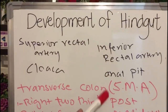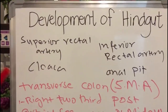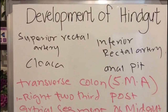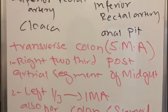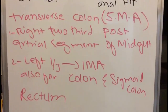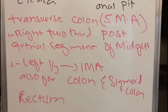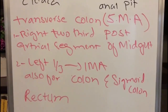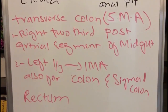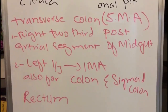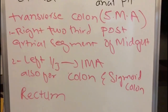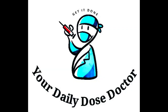The cloaca is supplied by the superior rectal artery, while the anal pit is supplied by the inferior rectal artery. As we know, the right two-thirds of the transverse colon is part of the midgut and is supplied by the superior mesenteric artery. The left one-third of the transverse colon, sigmoid colon, and rectum are supplied by the inferior mesenteric artery. That's all for this video, thank you so much for watching.